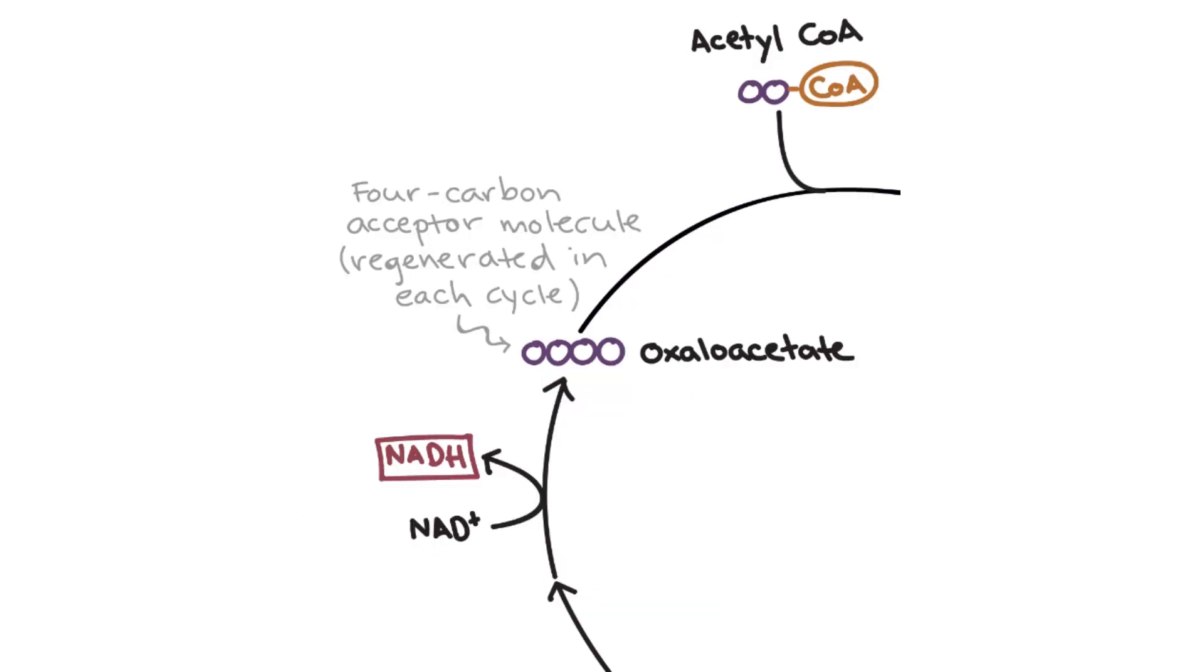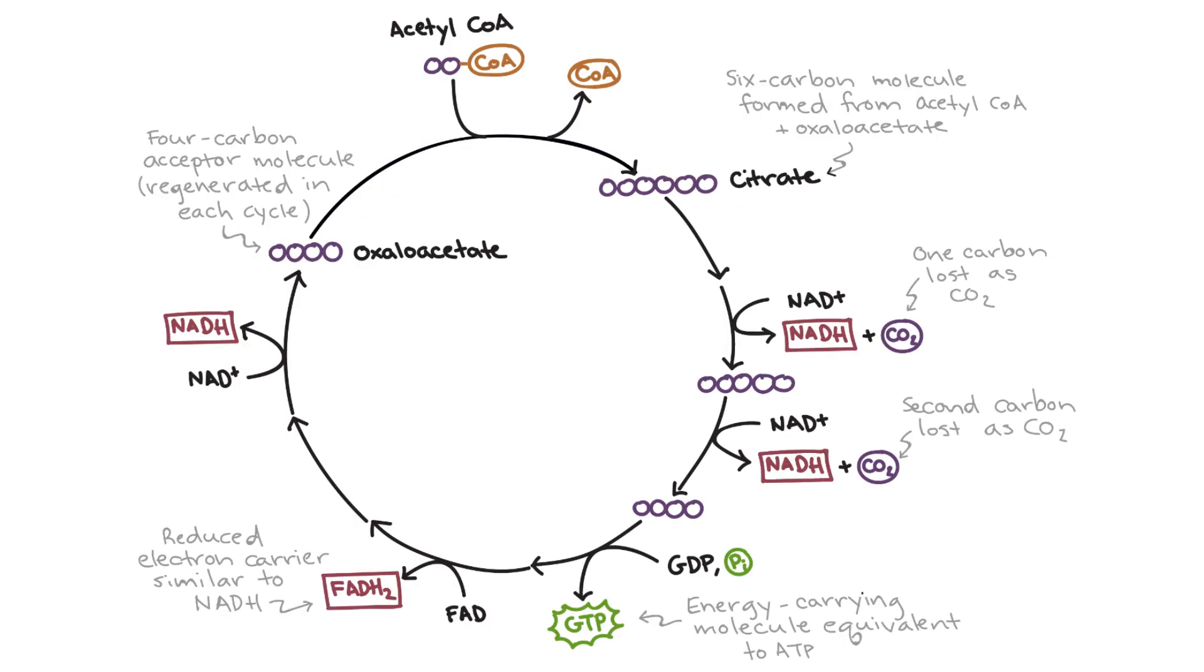The four-carbon molecule then also creates another NADH, and then we end up with our oxaloacetate again at the end, which is used with the acetyl-CoA to go through the whole Krebs cycle again.